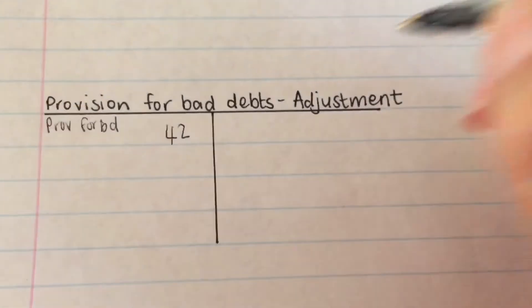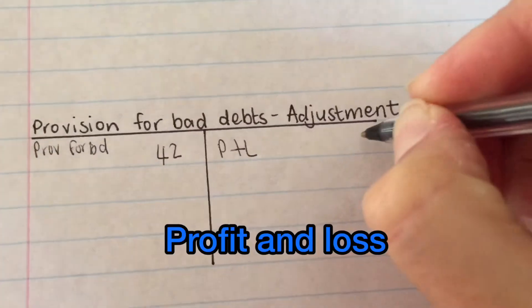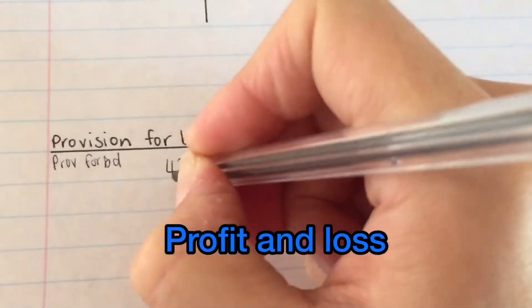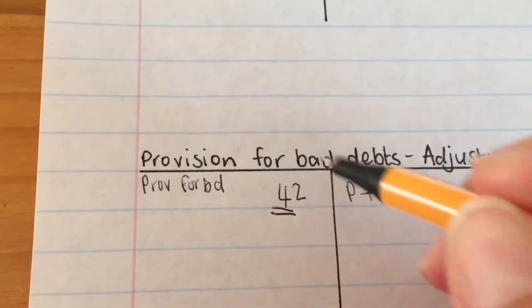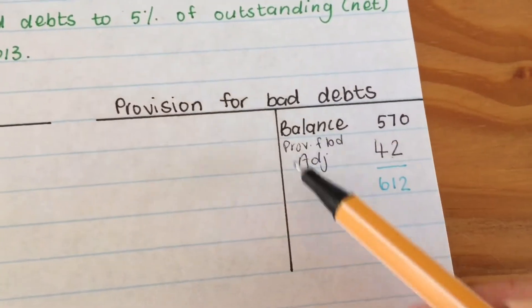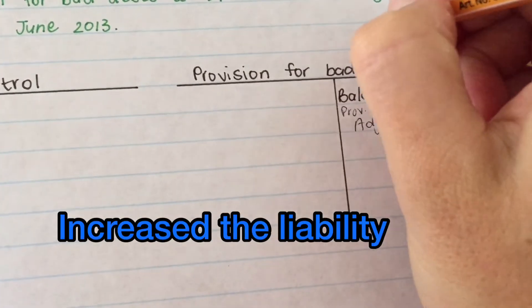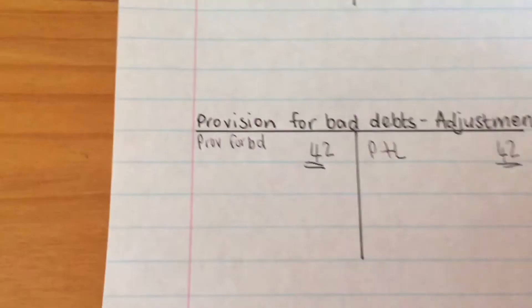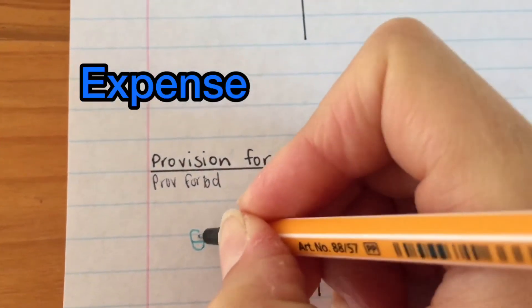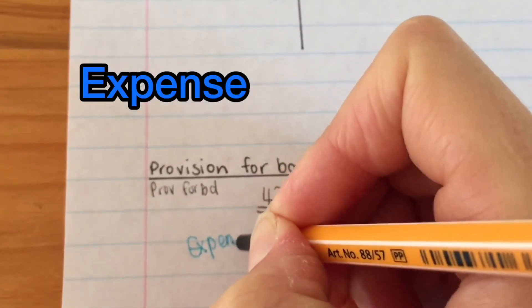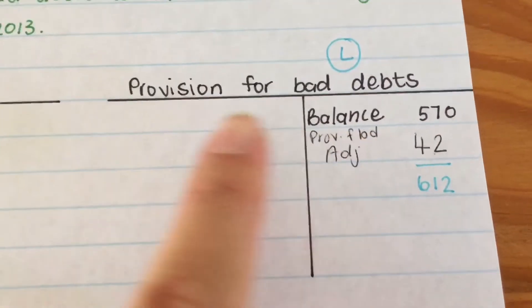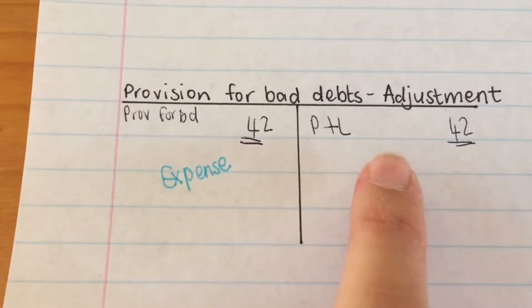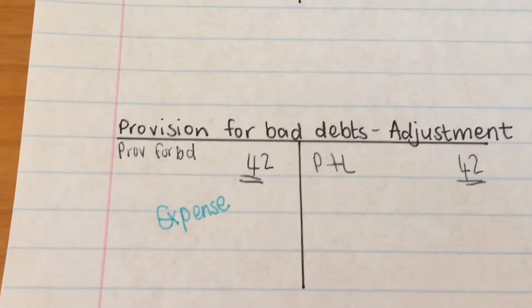Later on, this will close off to profit and loss. Because I've entered this on the debit side, I have increased my liability, so this will be an expense. If I had decreased my liability — meaning I had to subtract something — then this account would have been an income, because I would have entered it on the credit side.